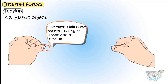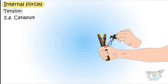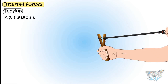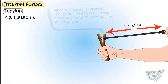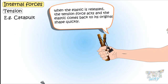One very good application of this tension force is a catapult. A stone or anything is placed in the catapult and the elastic strings are stretched as far as possible. It produces tension in the elastic strings due to elongation. When the elastic string is released, the tension force acts and the elastic comes back to its original shape quickly, and the object goes far with speed.